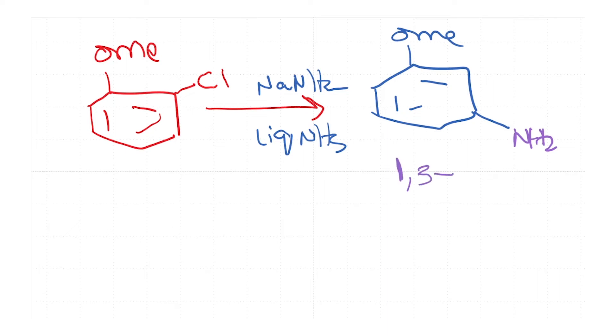So here you start with the methoxy at 1 position and chloro at the 2 position, but you end up with methoxy at 1 position and aniline at the 3 position. So this is another piece of evidence that suggests that the benzyne mechanism is actually in play. There are other pieces of evidence which are available for the formation of the benzyne.